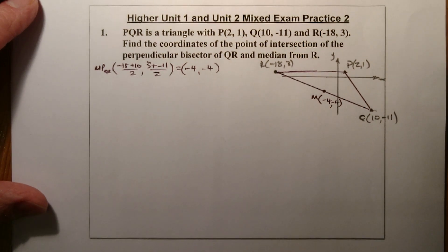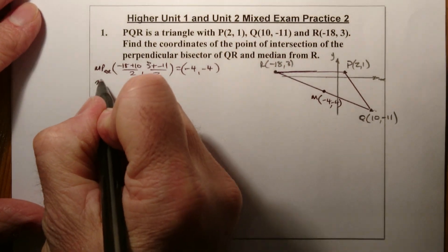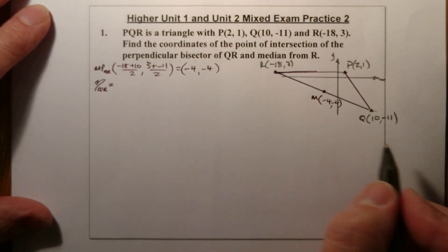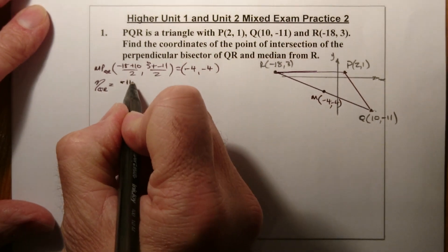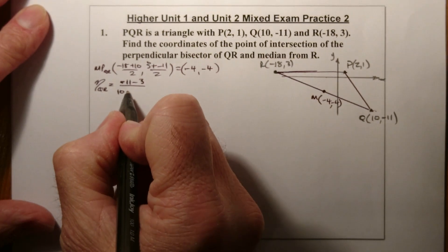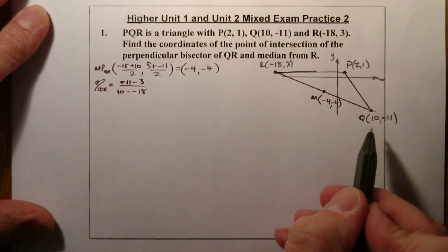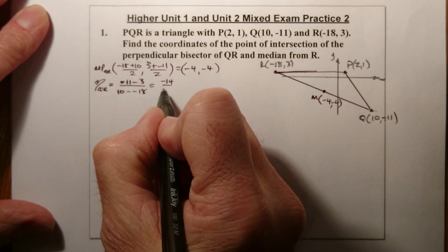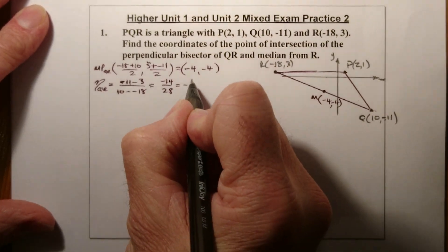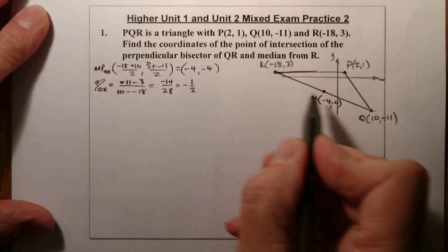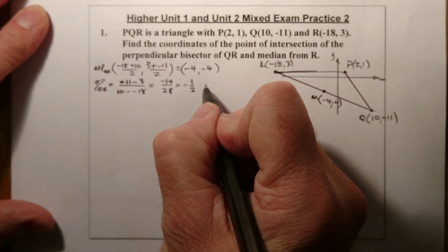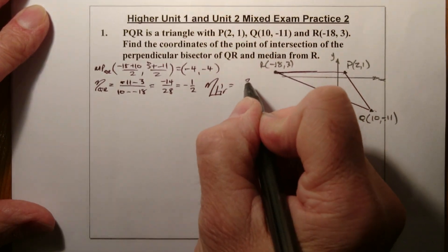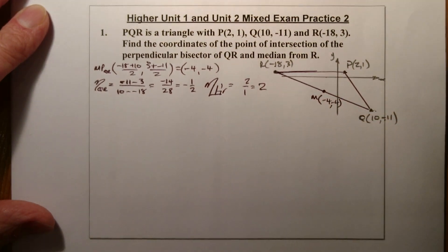Now I want to find the gradient of QR: y2 minus y1 over x2 minus x1. So that's (-11 - 3) / (10 - (-18)), giving -14 over 28, which simplifies to -1/2. Then I find the perpendicular gradient by flipping it over and changing the sign, giving me 2.